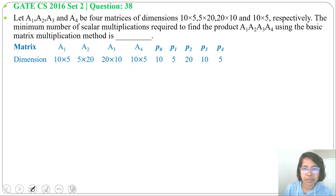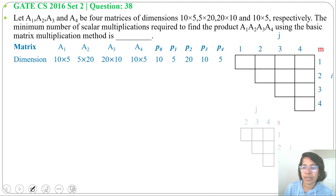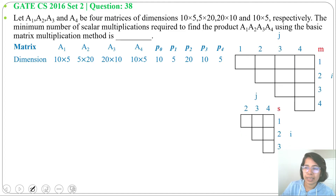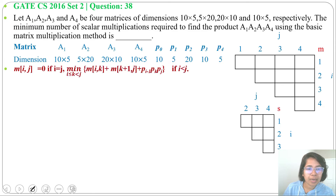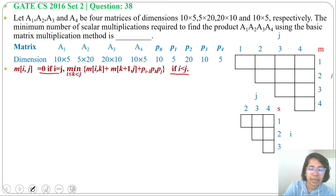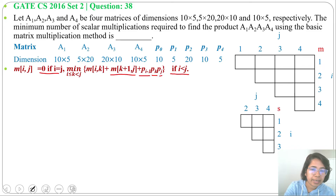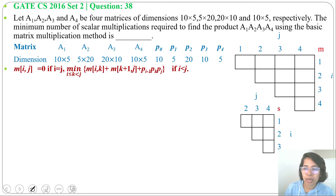Please go through the matrix chain multiplication lecture before solving this. We'll create two tables: M for multiplication costs and S for split points. M[i][j] = 0 if i = j. If i < j, then M[i][j] = M[i][k] + M[k+1][j] + p(i-1)·p(k)·p(j), where k ranges from i to j-1. So M[1][1], M[2][2], M[3][3], and M[4][4] are all 0.